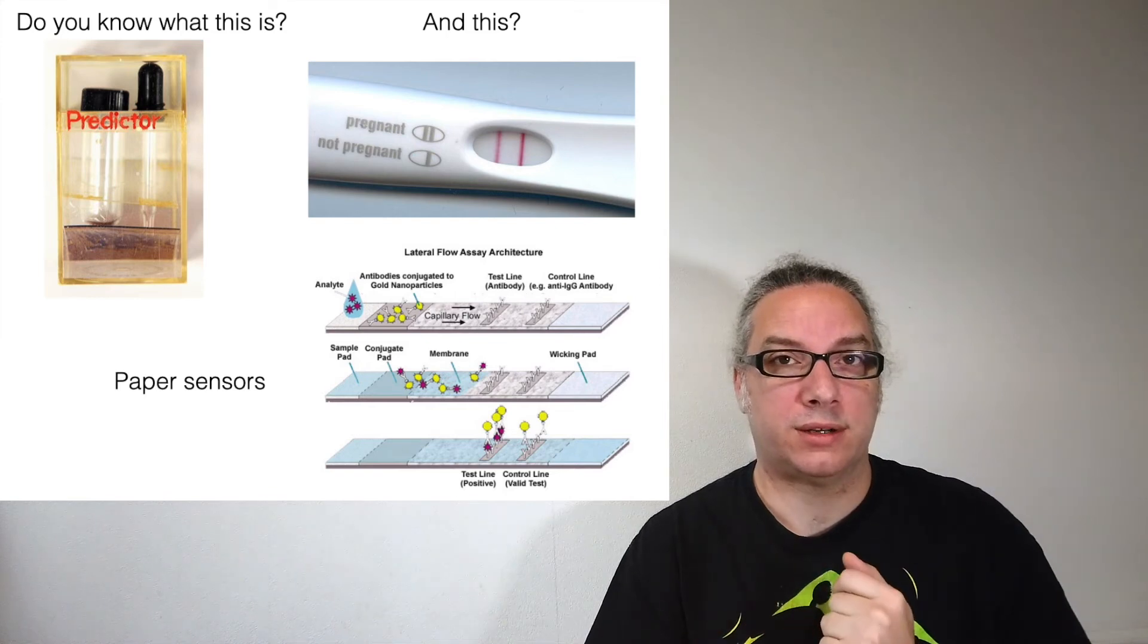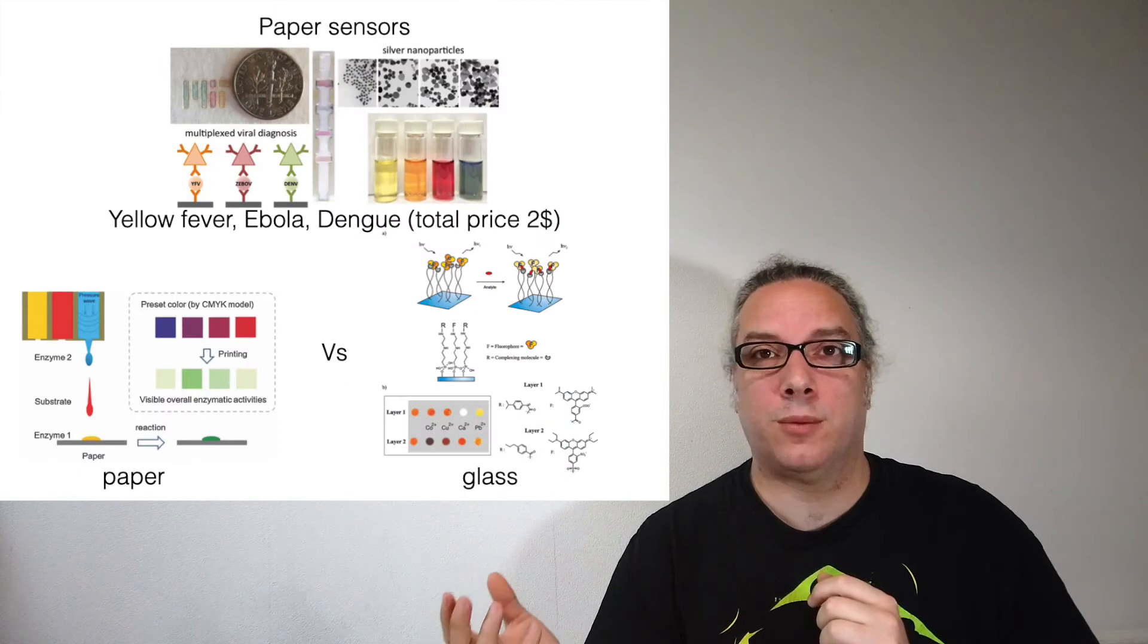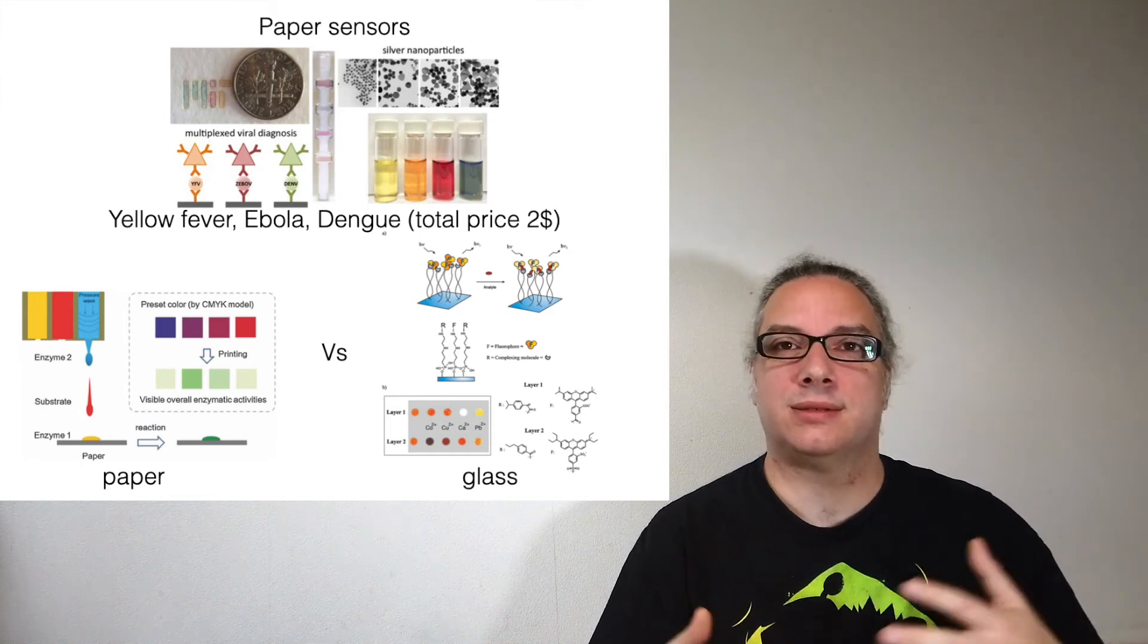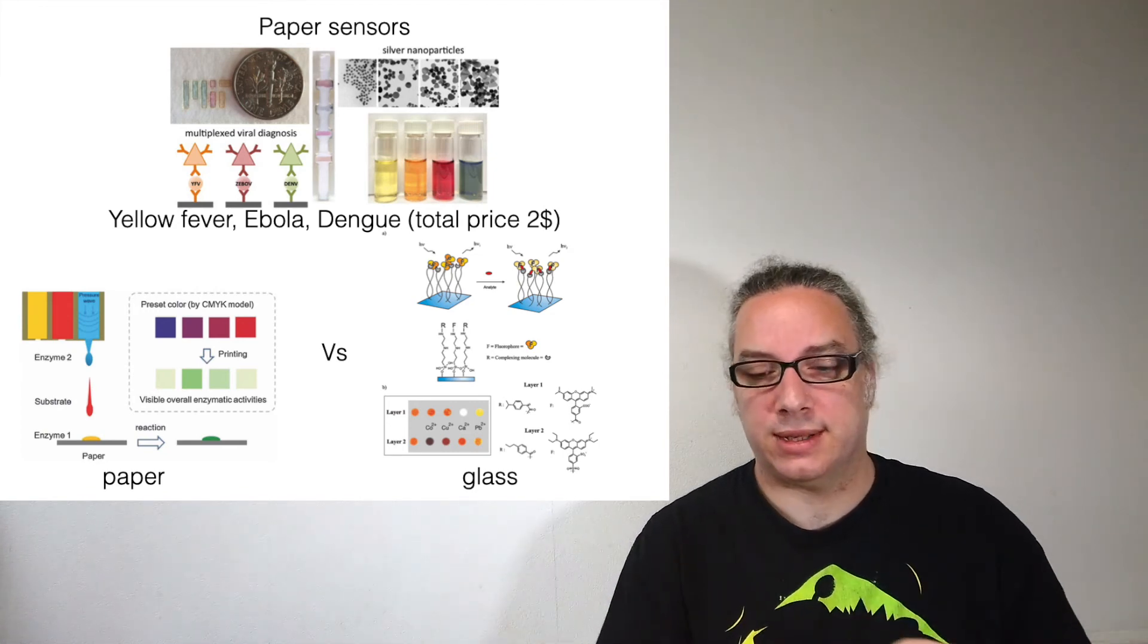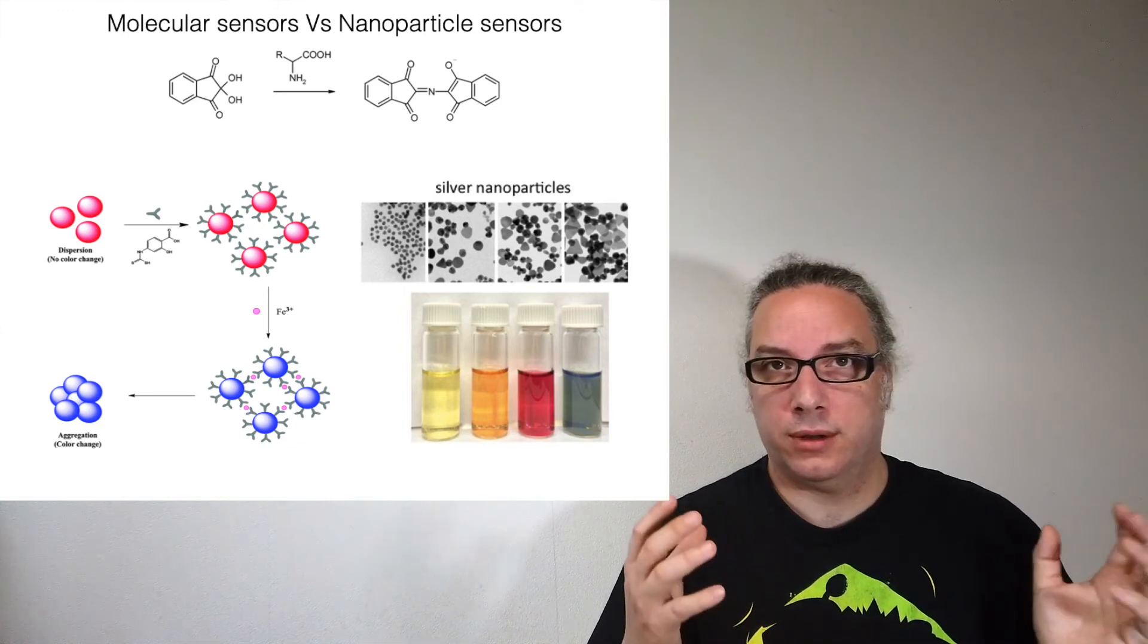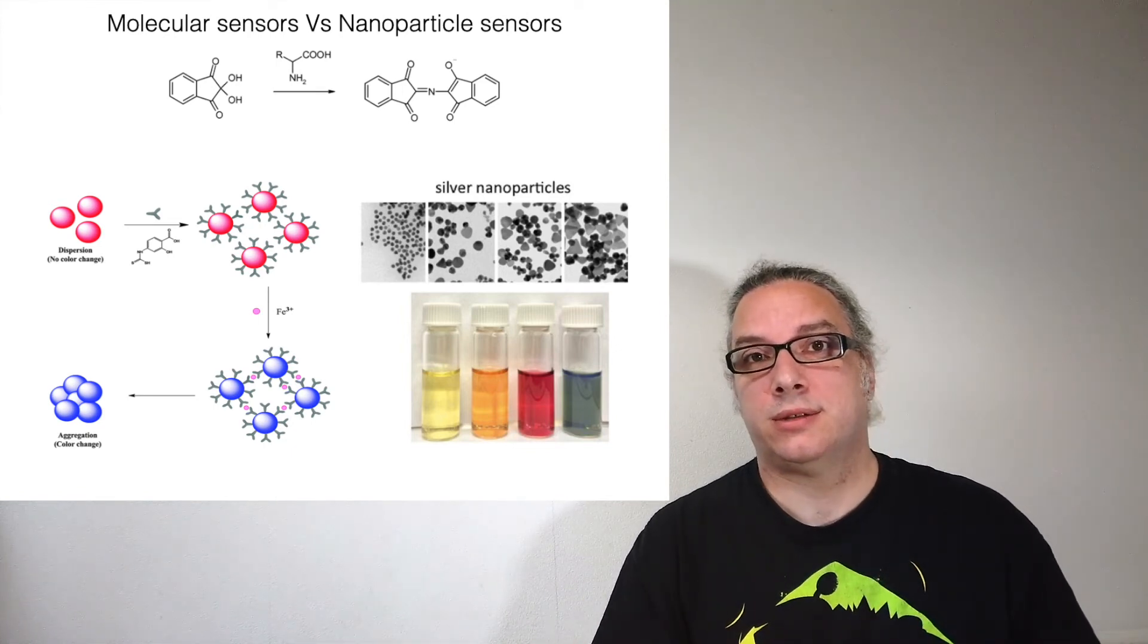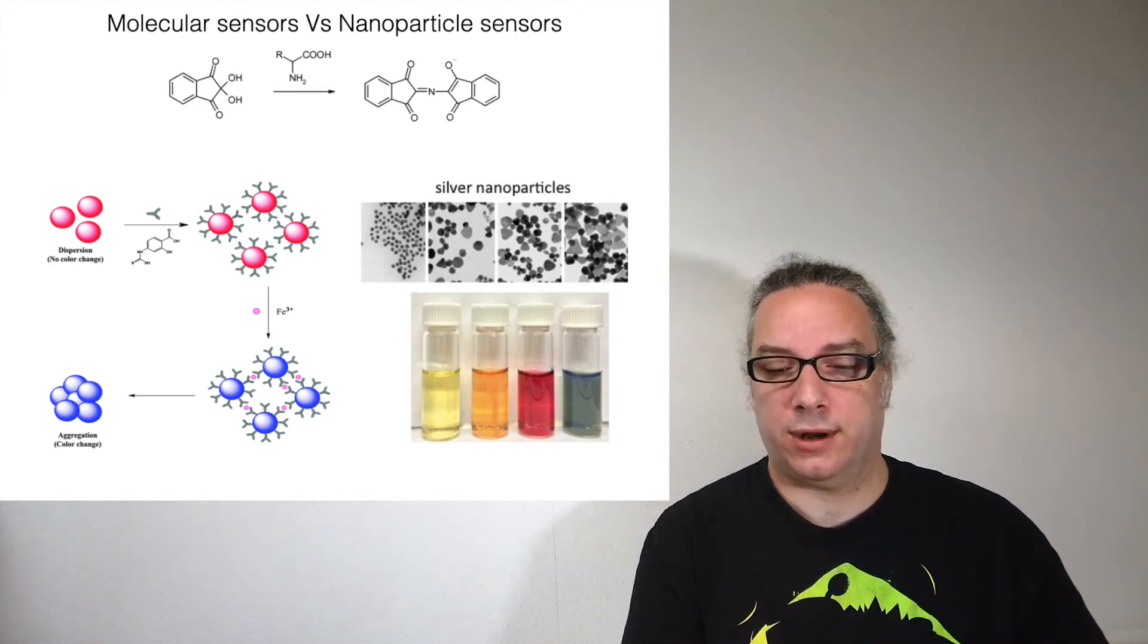How do they work? Why are they so useful? The pros and cons of paper sensors. We will compare those sensors to the glass sensors. I will show you that the chemistry used for modifying both the paper and the glass is more or less similar. What are the pros and cons of paper against glass sensors? We are going to see what's the difference between molecular sensors—where the molecules change upon stimuli—against nanoparticle sensors. We can also make nanoparticles and this one can be used as a sensor. What's the difference between the molecule and the nanoparticle?